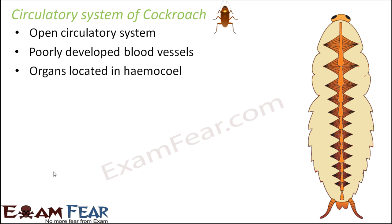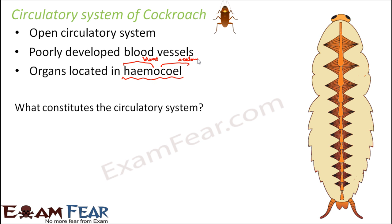Blood is located in organs within the hemocele. The word 'hemo' comes from blood and 'cele' comes from coelom, which means body cavity. So hemocele means that blood is present in the body cavity — in all the empty spaces inside the body, blood is present.